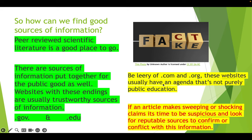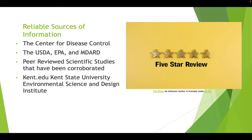You'll have a fact-checker activity to do online this week to help you practice those skills. Reliable sources of information would be something like the Center for Disease Control, the U.S. Department of Agriculture, the Environmental Protection Agency, the Michigan Department of Agriculture and Rural Development, peer-reviewed scientific studies that have been corroborated and repeated by other scientists, or something like Kent State University Environmental Science and Design Institute.